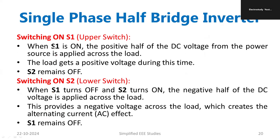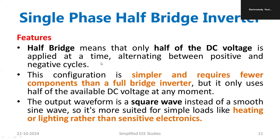For your reference, here is the summary suitable for examination purposes. When S1 is on during the positive half cycle, a positive voltage appears across the load while S2 remains off. When S2 is on, S1 is automatically off and negative voltage appears across the load, creating the alternating effect — a positive half cycle and a negative half cycle. However, the output shape is a square wave, so it is not well suited for all applications.